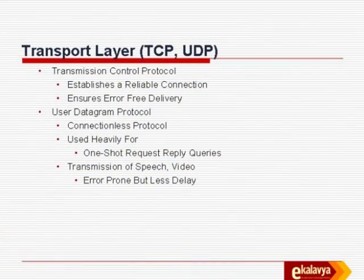The IP layer is the one which takes these packets, sends them, and receives them, working with host address, destination address, source address, etc. But something meaningful has to be done, and that happens at the transport layer. At the transport layer there are two protocols: one is called Transmission Control Protocol or TCP, and the other is called User Datagram Protocol or UDP.